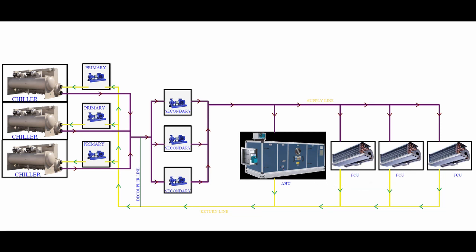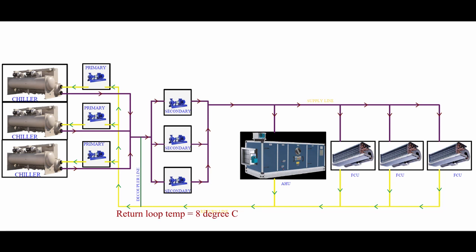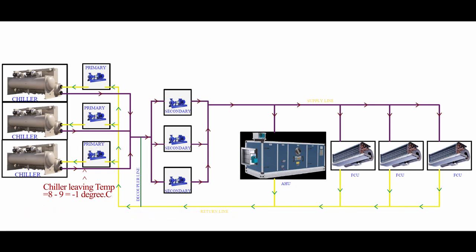So this 8°C return chilled water will be going back to the chiller. The chiller always needs a minimum flow rate — that is why we use the primary pump. The chiller delta T is 9°C, fixed as per the design calculation. Now for the chiller: the inlet temperature is 8°C and the delta T is 9°C, so the leaving temperature will become minus 1°C. Water will freeze at this temperature and it should not happen. This is called low delta T syndrome.